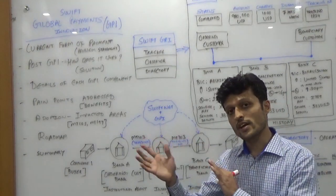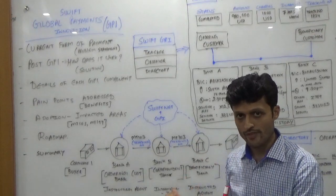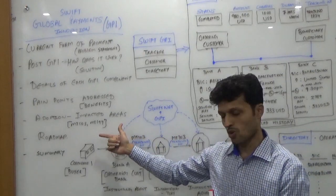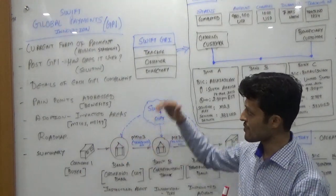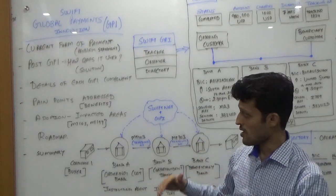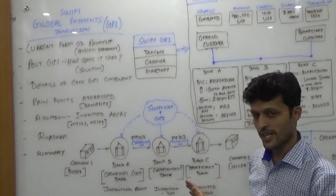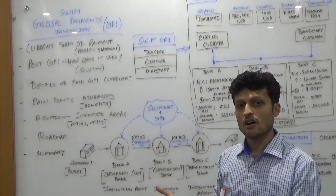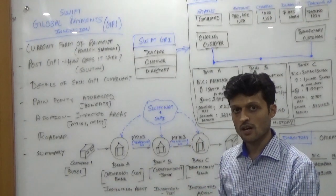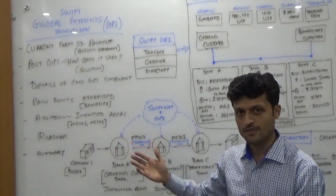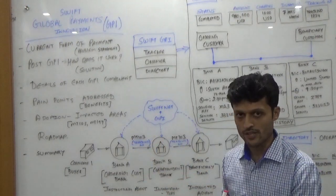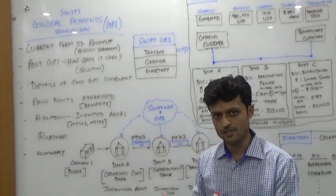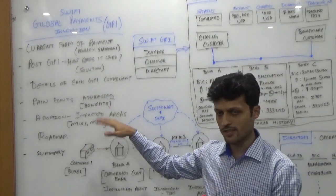What different APIs or connectors we need to configure as part of the GPI initiative. Finally, the roadmap items. Swift GPI is divided into three different phases. We are going to cover only phase one, which is currently live in the market and already released by Swift. Phase two and phase three are upcoming — these are roadmap items still in the development phase, with Swift running pilots with different banks and financial institutions. Finally, we will summarize.